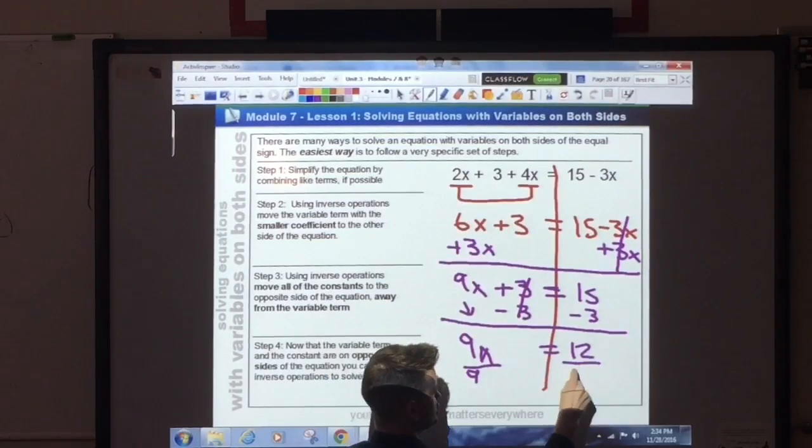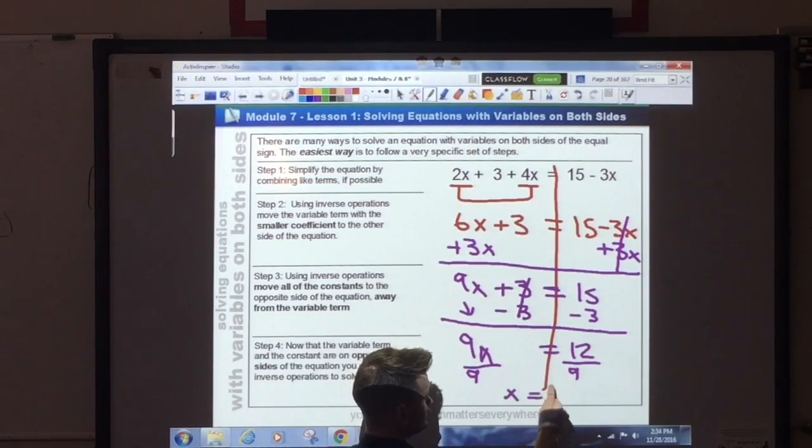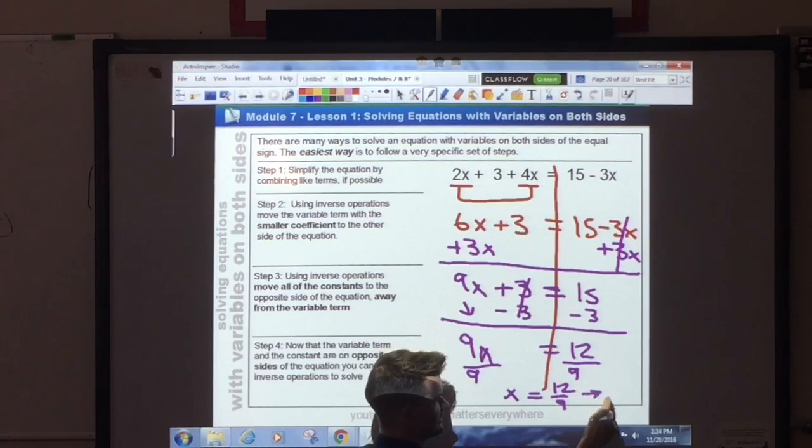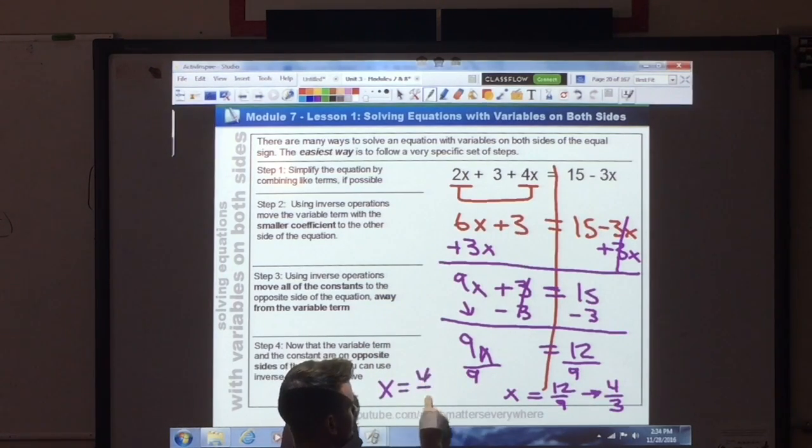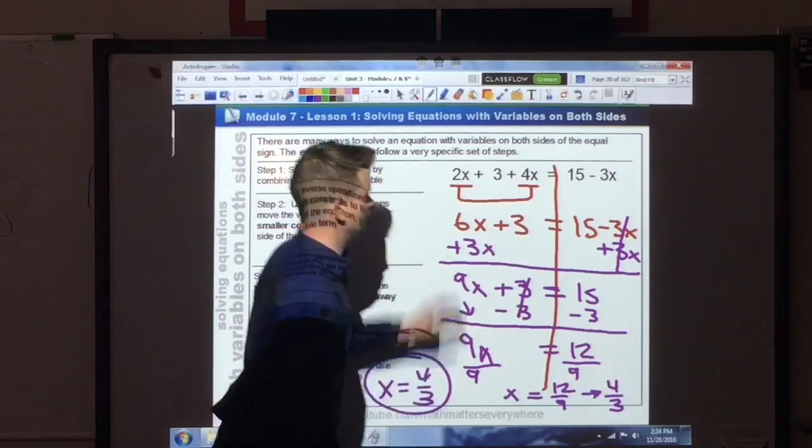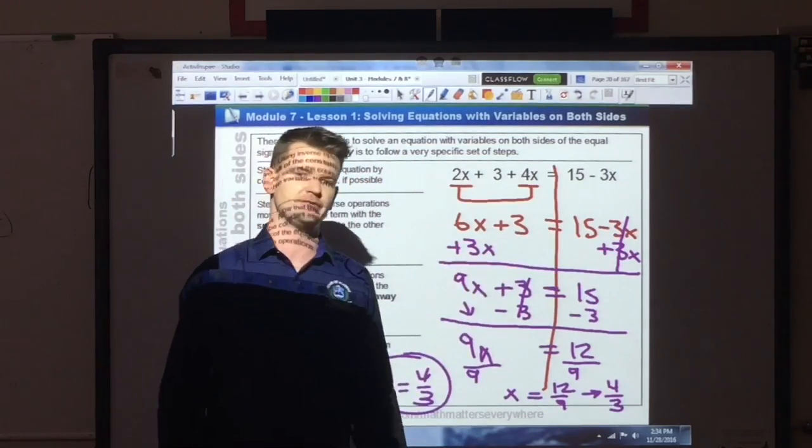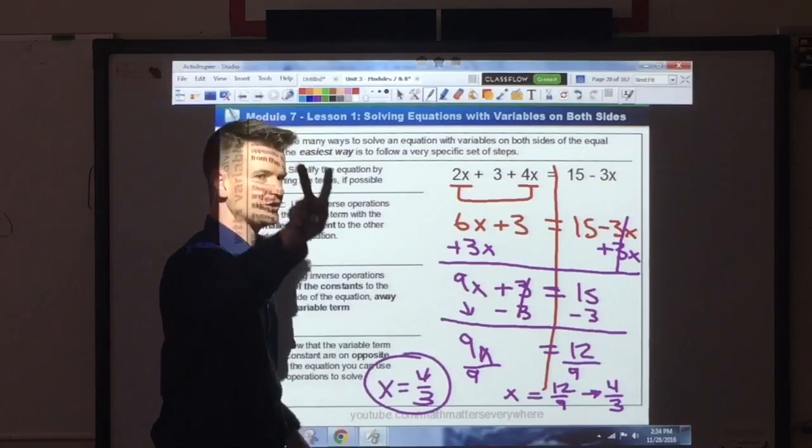Now that I'm here, I divide both sides by my coefficient. I get x is equal to 12 over 9. I can simplify this fraction. The greatest common factor is 3, so this will simplify down to 4 thirds. So x equals 4 thirds. It's just that simple. Combine like terms. Move the variable term with the smaller coefficient. Solve from there. Let's try two more examples.